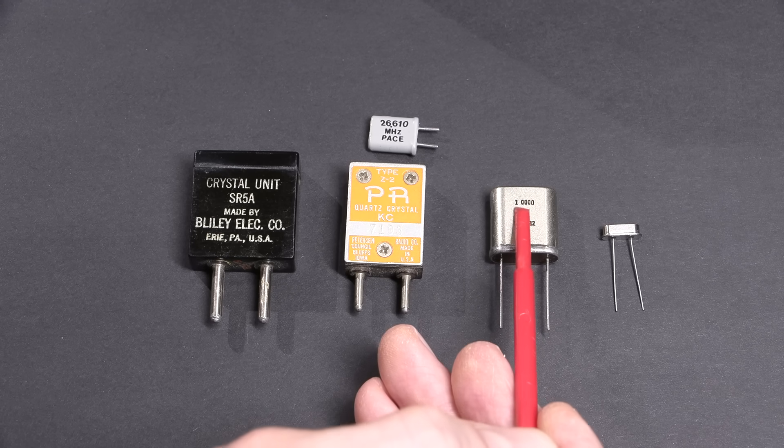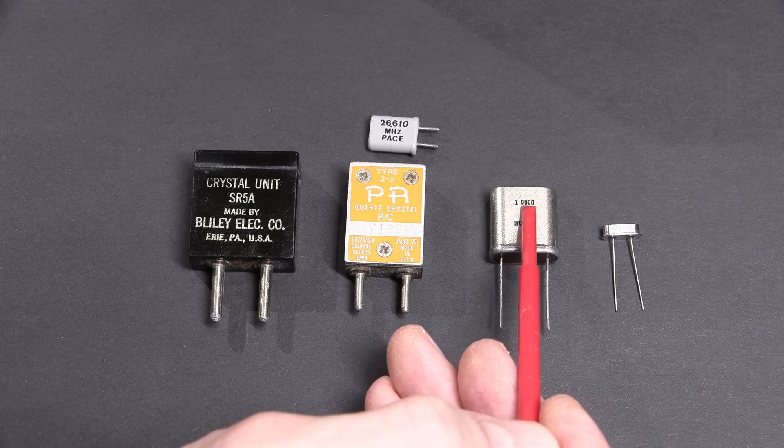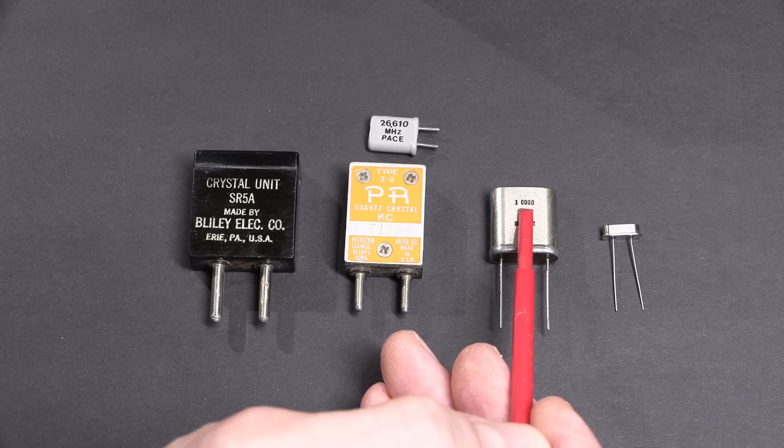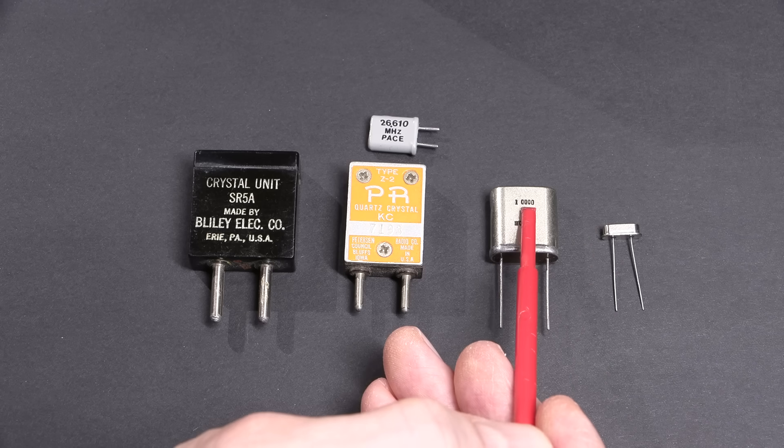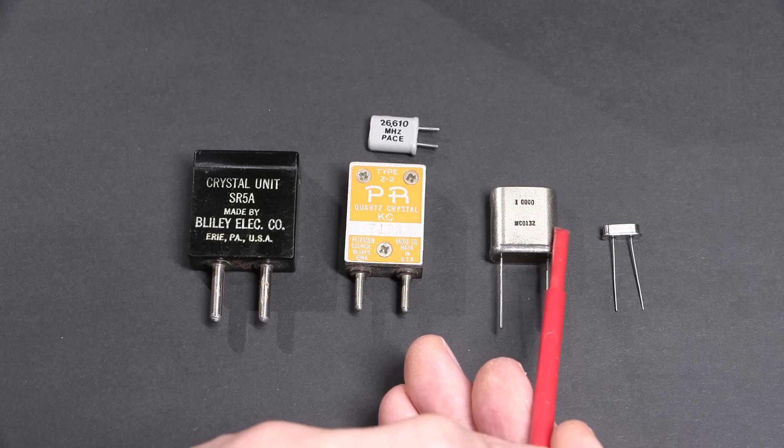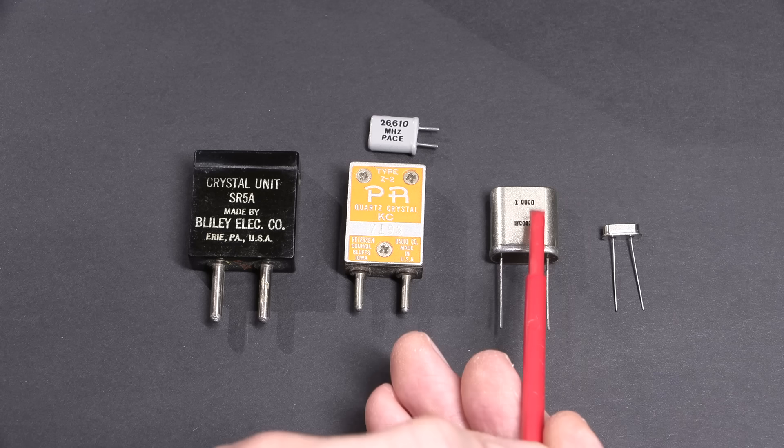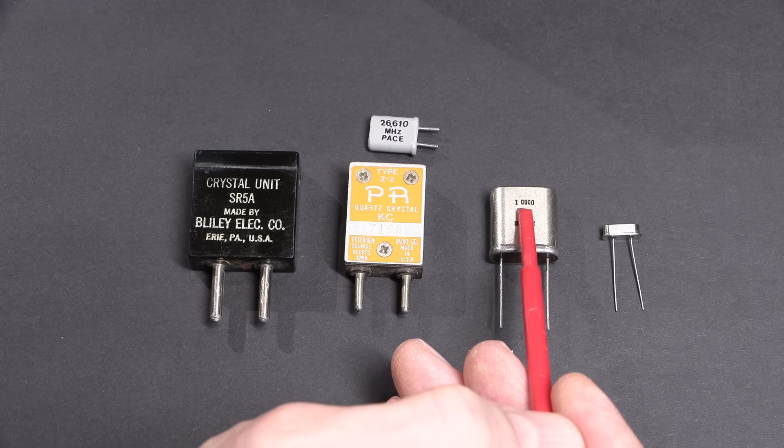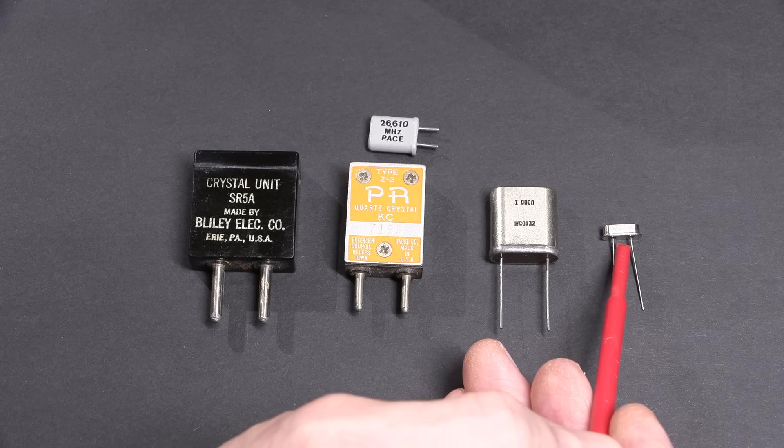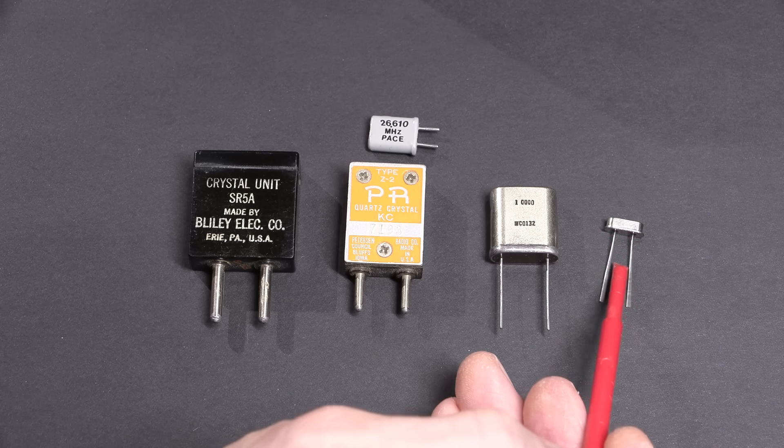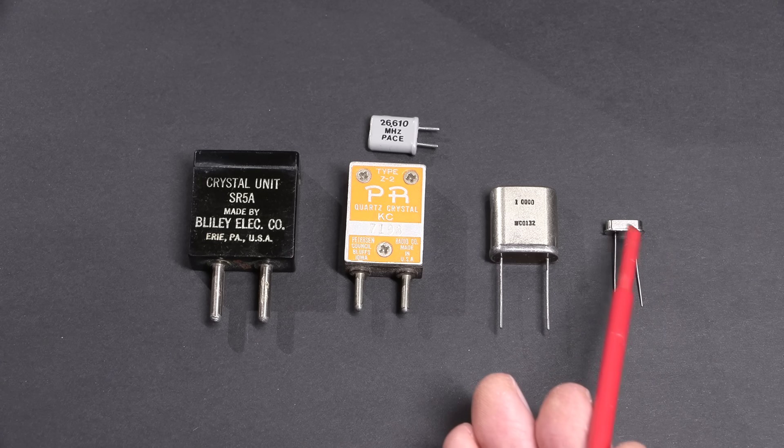So you can see this one here is rated at 1 megahertz or 1,000 kilocycles. This is often used in a time base inside of a frequency counter or something like that. Yaesu in many of their older frequency counters used 1 megacycle crystals inside. This one here is I believe a 10 megahertz crystal, again used as a time base.